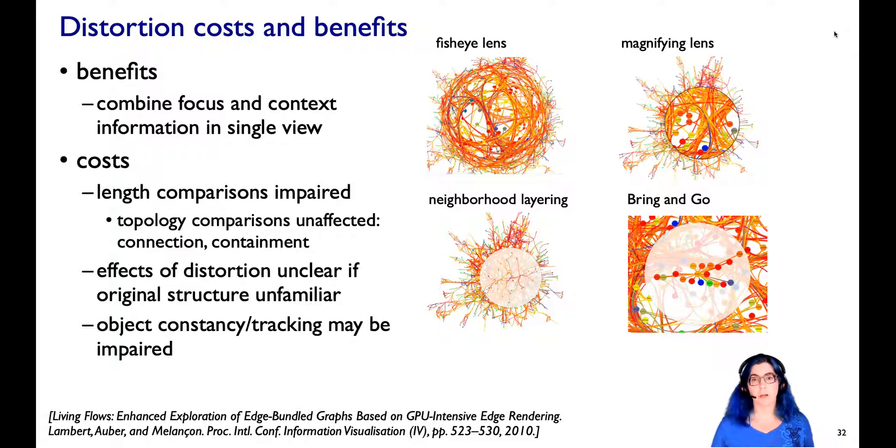So there are some costs. As you might imagine, length comparison is impaired. There are a lot of contexts where we really do not want to impair length judgments. We'll talk quite a bit about that in the rules of thumb section. But one reason that focus plus context approaches that use geometric distortion have been particularly popular for topological data is that topology comparisons are not affected. There's still a line between two objects, still a containing and closing remark. These might be most useful in contexts where you're dealing with topological network data.